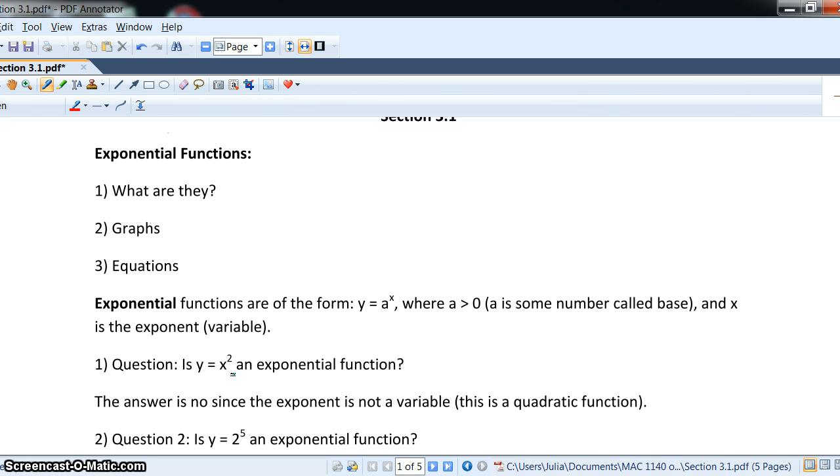So, y equals x squared is not an exponential function because the exponent is 2 and it does not change. It's a constant. And even though we have a variable on the base, it is still not an exponential function. Same thing for y equals 2 to the fifth, because that's simply y equals 32, and that's a constant, or a horizontal line.